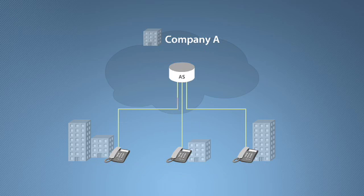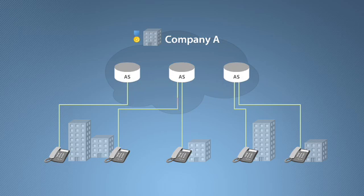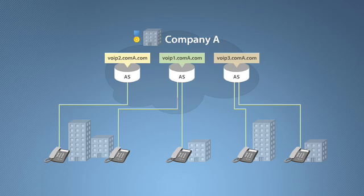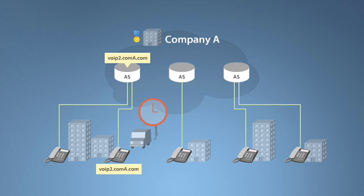Company A has developed a great reputation for its service and its subscriber numbers have grown. To keep up with the growth, Company A has deployed two more application servers, each with its own address. Now the subscriber records are distributed across three application servers. Since the SIP application server address is configured on each phone, Company A must reconfigure that address each time a customer is assigned to another application server. This complex process slows response times and increases provisioning errors, resulting in service disruption and higher operational costs.